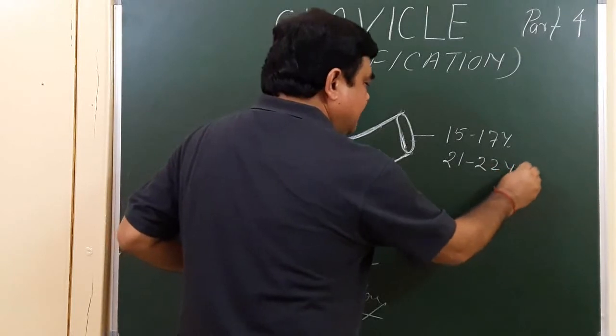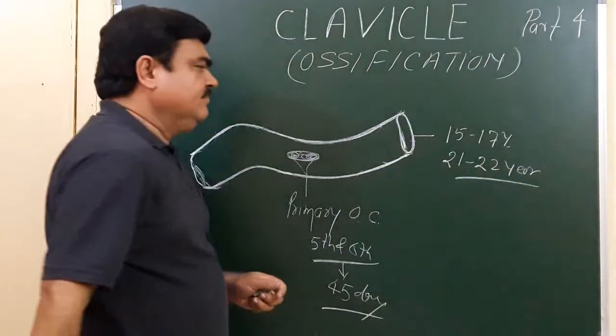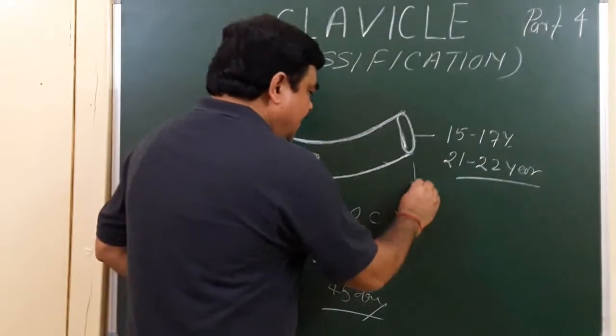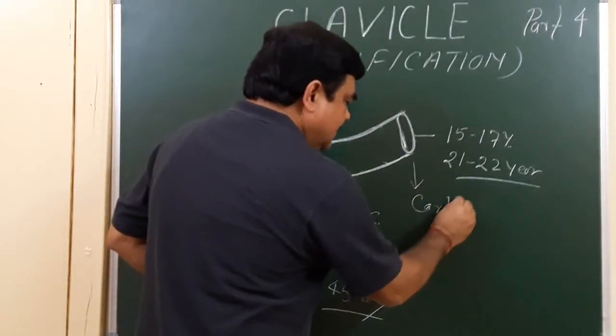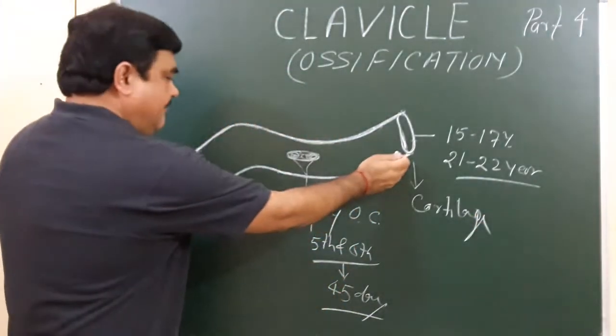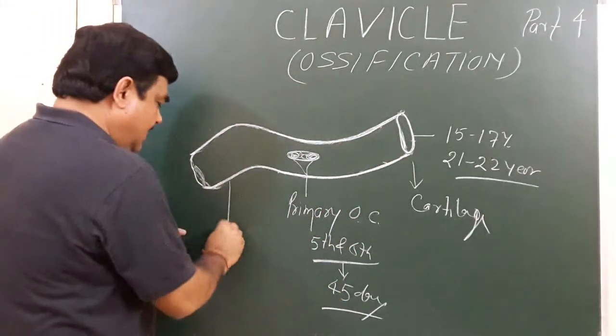This medial end ossifies in cartilage, whereas the rest part from here to here ossifies in membrane.